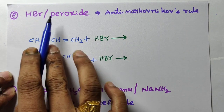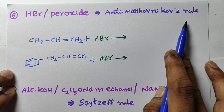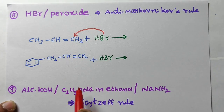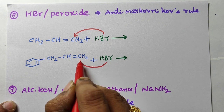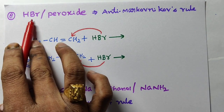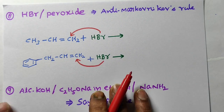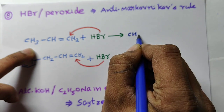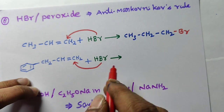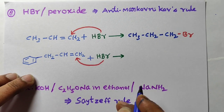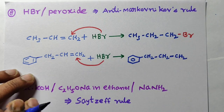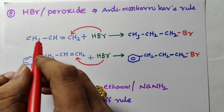Next reagent: addition of hydrogen bromide in the presence of peroxide, which follows the Anti-Markovnikov rule. According to the Anti-Markovnikov rule, the bromine free radical will attack at the more hydrogen-containing double-bonded carbon — opposite to Markovnikov's rule. Remember, this applies only to HBr with peroxide — not HCl and not HI. So for CH3CH=CH2 with HBr/peroxide, bromine attacks the terminal carbon to give 1-bromopropane. Anti-Markovnikov rule is very important.